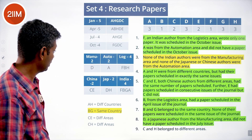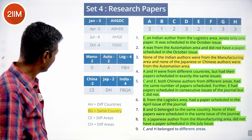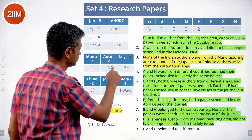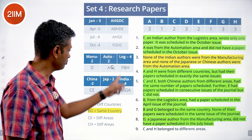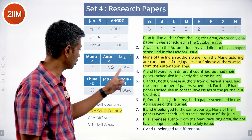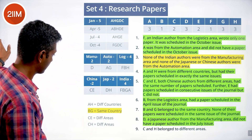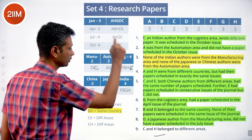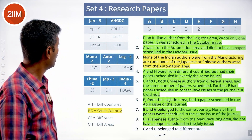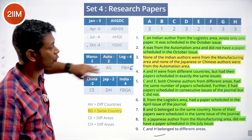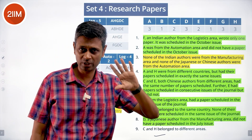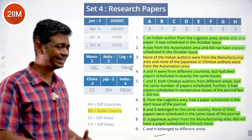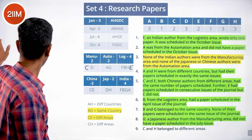B and G belong to the same country. Since China is accounted for by C and D, and Japan has only two spots, B and G must be Indian. So the Indian contingent is F, A, B, G. Japan is D and H. Since C and D must be in manufacturing and logistics, and C and H must also be in different areas, H must go into logistics — there's no room for H in manufacturing. C and D fill manufacturing and logistics. The entire grid is now complete.